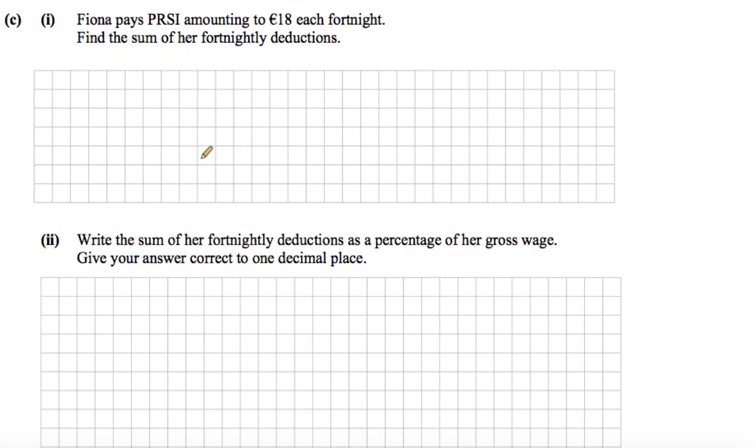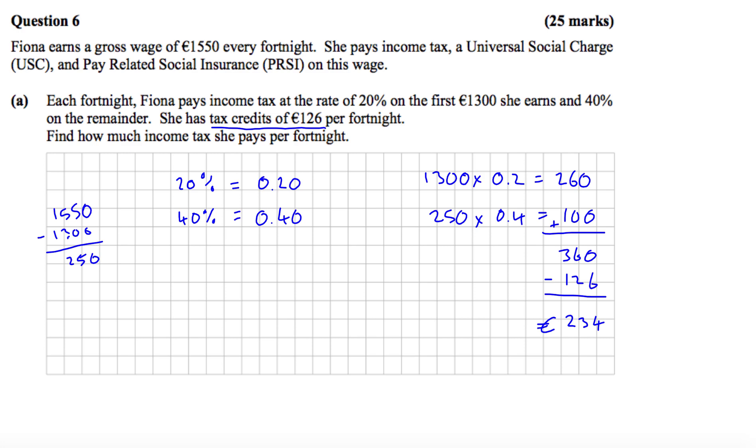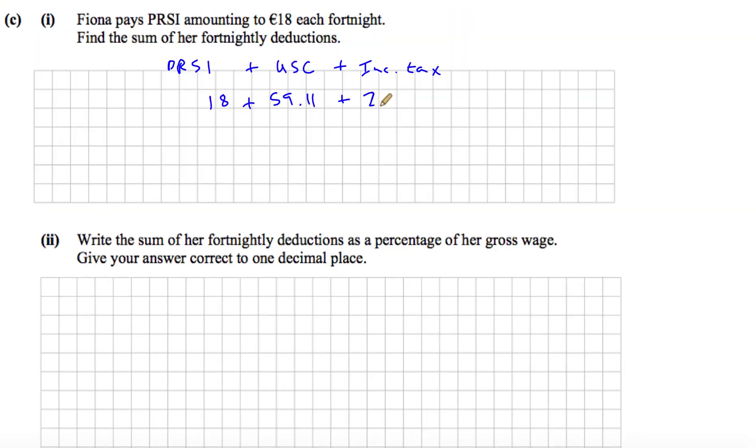Okay, finally, part C, one. Fiona pays PRSI amounting to €18 each fortnight. Find the sum of her fortnightly deductions. Okay, so the fortnightly deductions, we have the €18 for PRSI plus we have the USC plus income tax. So these were all her deductions. So USC was €59.11. And then her income tax was €234. So when we add all those together, the total we get is €311.11. That's the sum of her fortnightly deductions.